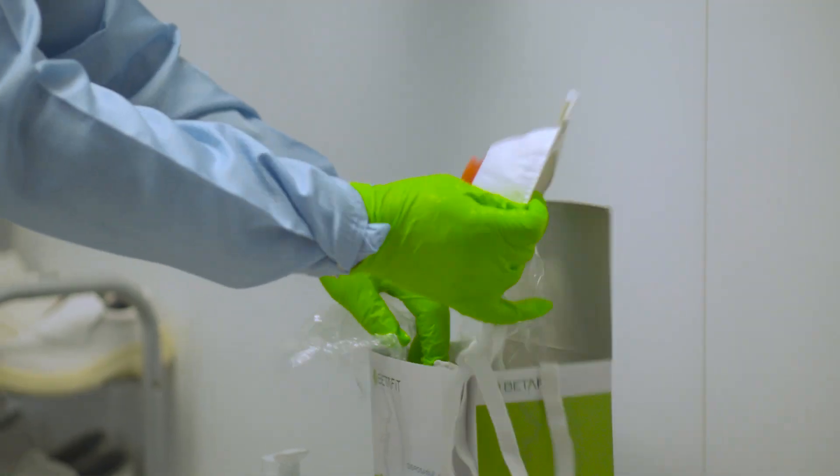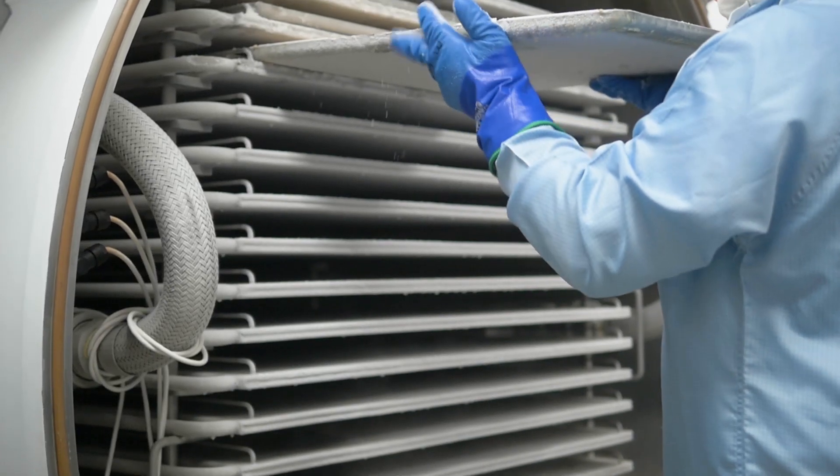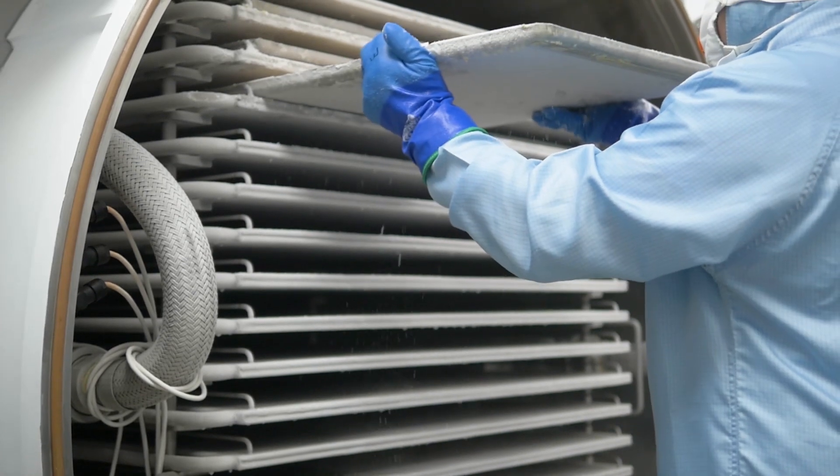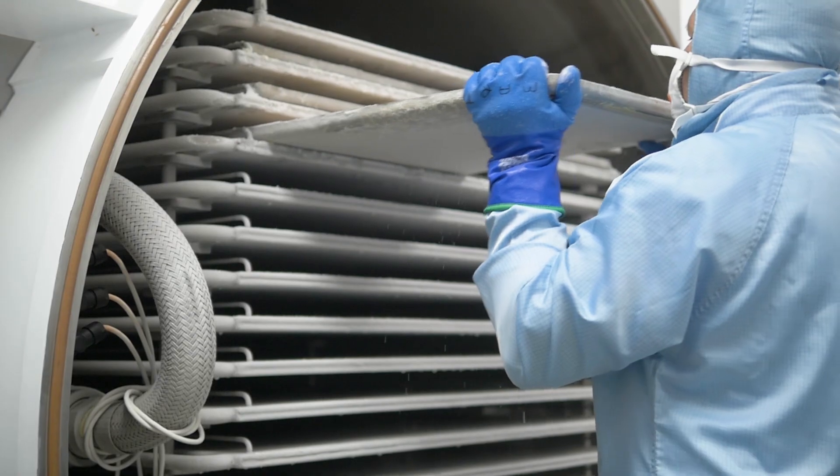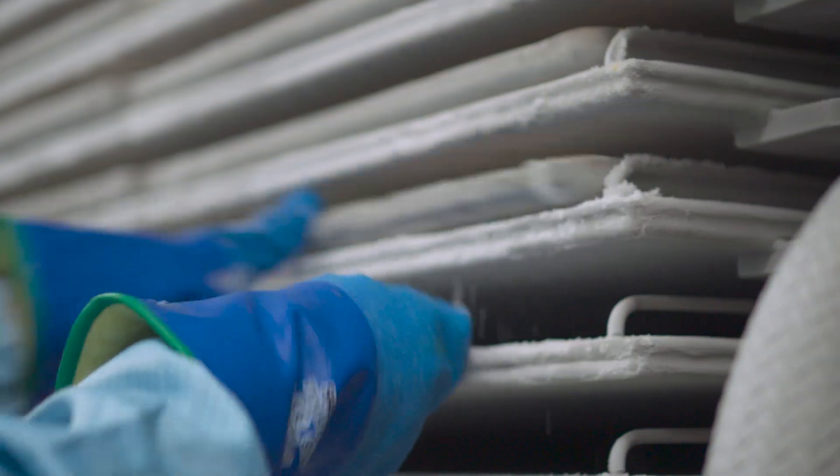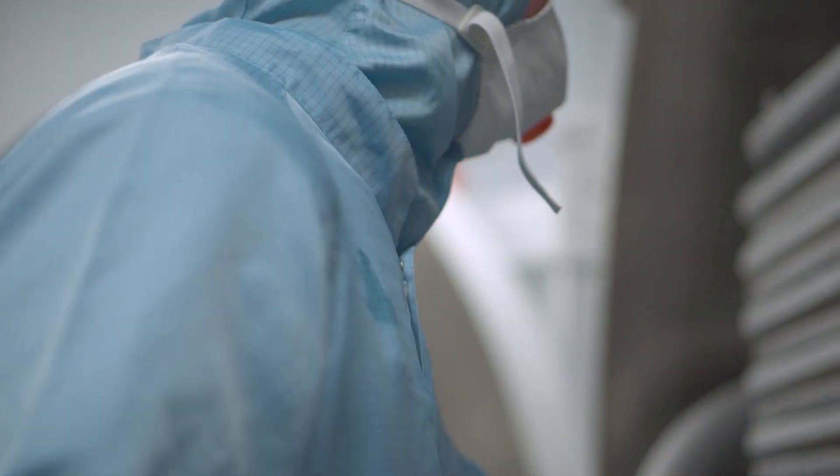Freeze drying is a dehydration process typically used to preserve perishable materials such as bacteria. This process consists of freezing the bacterial paste, then reducing the surrounding pressure. This allows the frozen water in the material to sublimate directly from the solid phase to the gas phase. This means the bacteria paste dries without exposure to high temperatures, something that can easily damage bacteria.